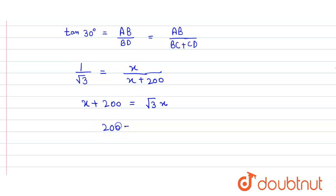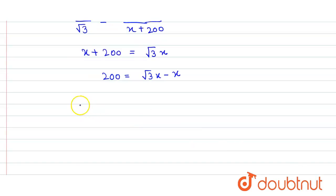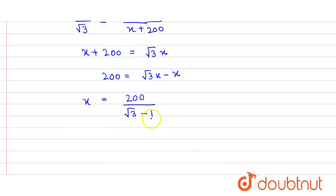Cross multiplying, we get x + 200 = √3·x. So 200 = √3·x − x. Therefore the value of x = 200 divided by (√3 − 1). Now we rationalize the denominator.